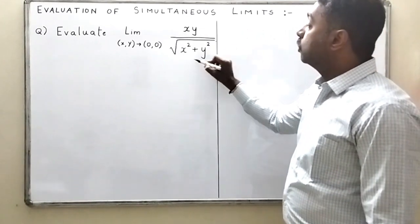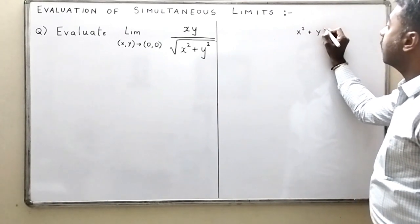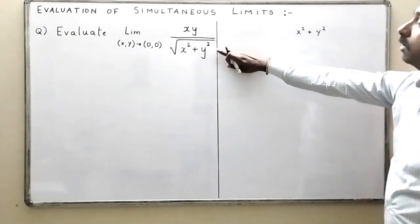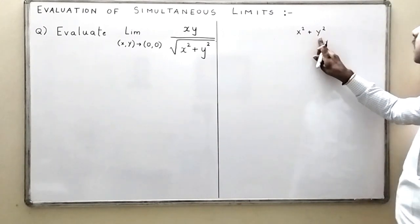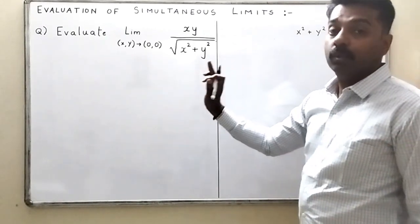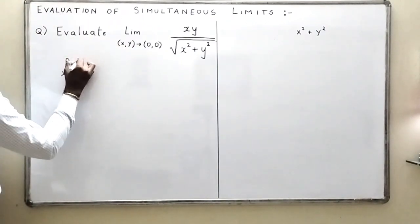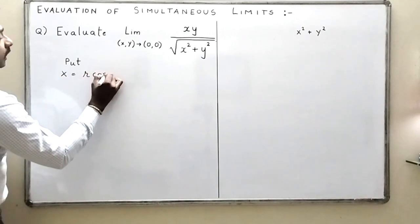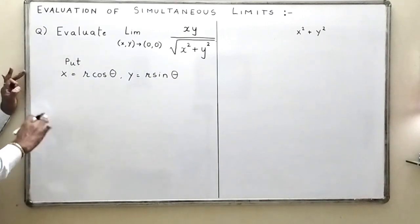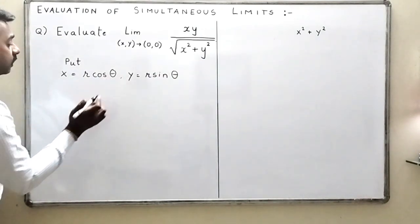Whenever you have x² + y² in the denominator — here you have square root of x² + y² — it is always better to substitute x = r cosθ, y = r sinθ. This will be the standard trick to do such problems with x² + y² in the function.